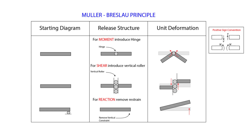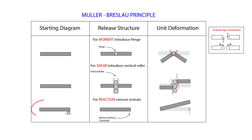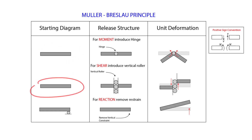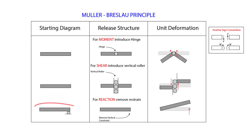We will use the Moeller-Breslau principle to visually draw our influence lines, using a flow where we start with the diagram and move to the right. On the left side we have the starting diagram — the condition we're looking at. Here it's a simple beam, and in one case we've added a roller at the end because we're considering reactions.